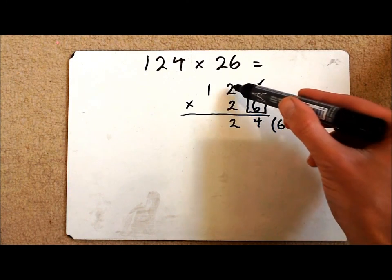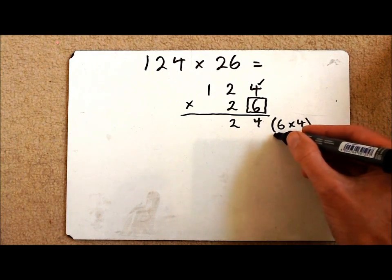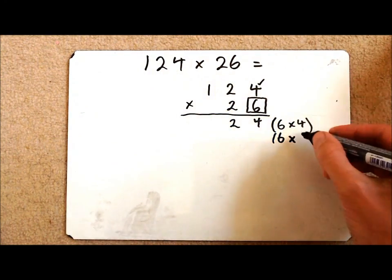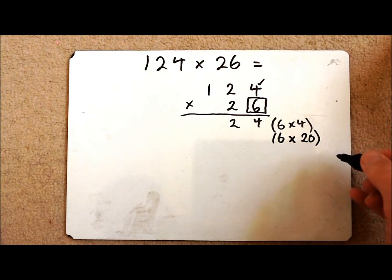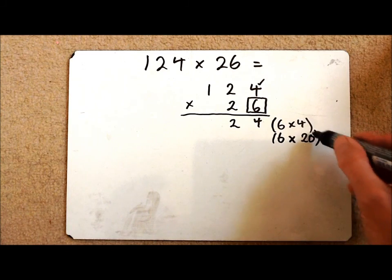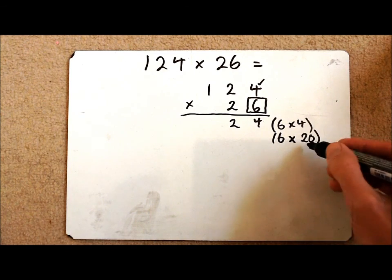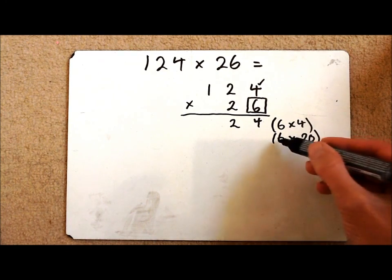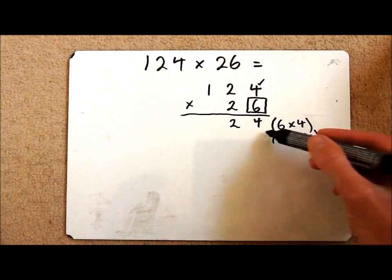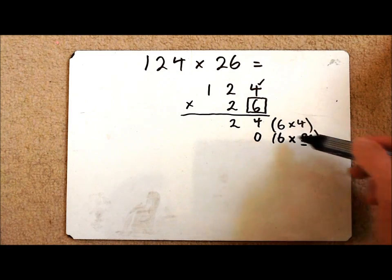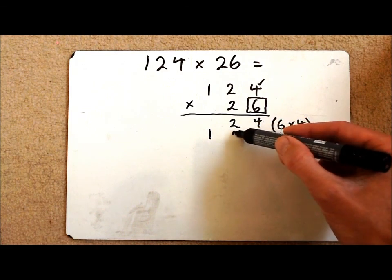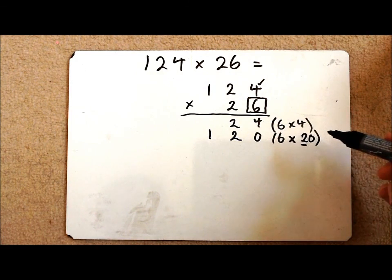I've then got to multiply my 6 by this digit over here. This digit though is in the tens column so I'm multiplying by 20. If I'm multiplying by a 10 all I have to do is think about what is 6 times 2 which I know is 12 and then make it 10 times bigger. So I've got one zero so I put that in the ones column and then the rest of my answer was 12. So the answer is 120.